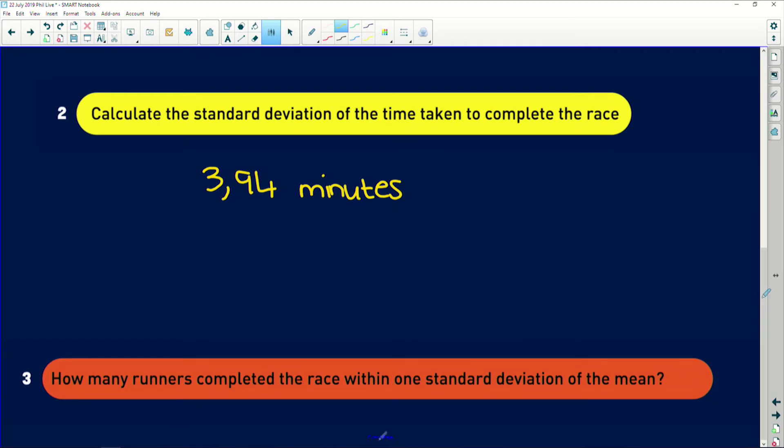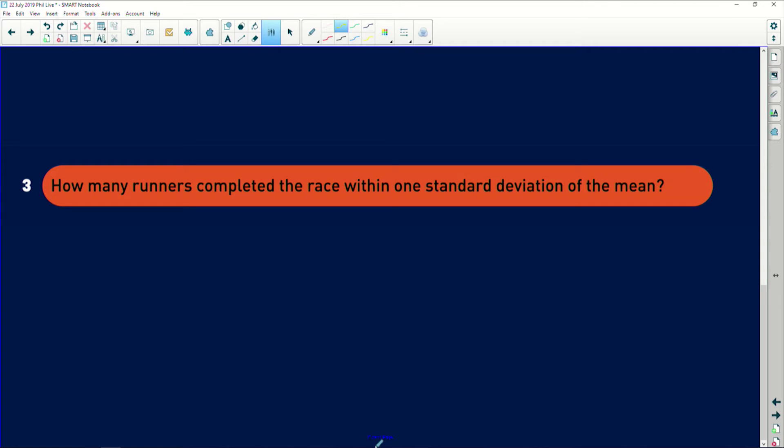Now, lastly, it says how many runners completed the race within one standard deviation of the mean? Okay, so now this is where you guys tend to struggle. When you see this question, you know when you have your uniform distribution. You've got your sort of axis along the bottom, and you've got a distribution that looks like a bell curve. It's uniform and it balances out like this. Obviously, smack in the middle you're going to have your mean.